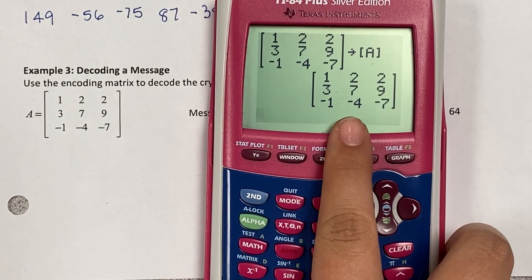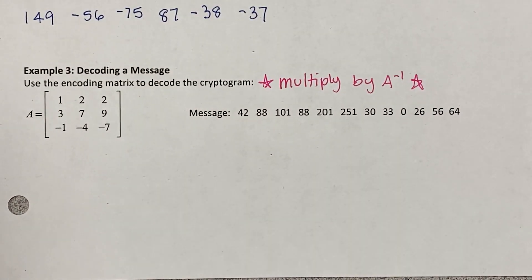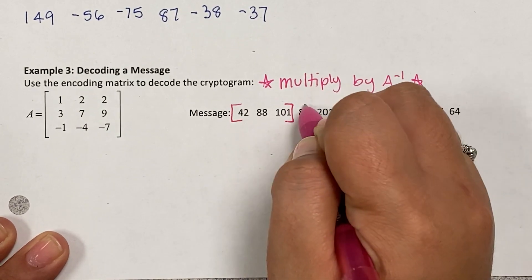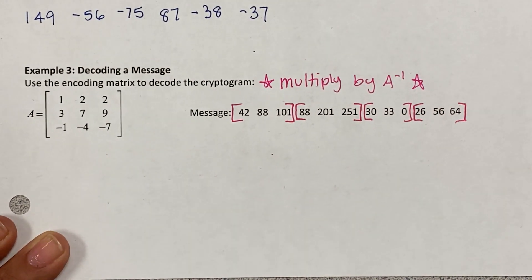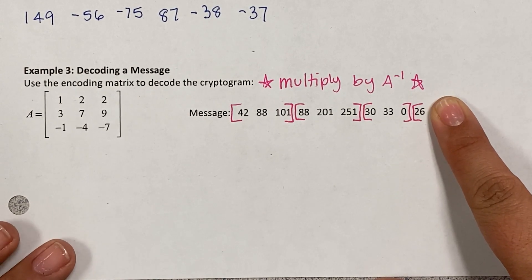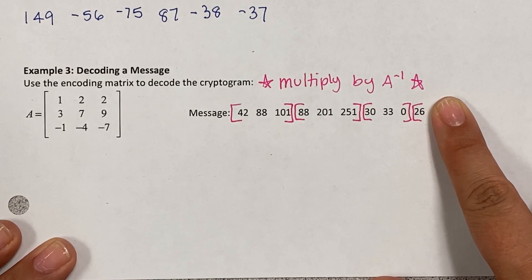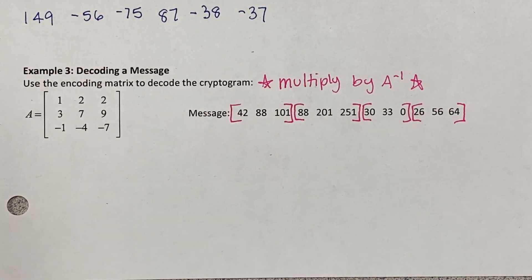Matrix A is a 3×3, which means the original message was partitioned into 1×3 matrices. I'll break the encoded message apart into groups of three. If the last group doesn't have enough numbers to fill a 1×3 matrix — say only one number like 26 — you can just fill in zeros until the matrix is complete.